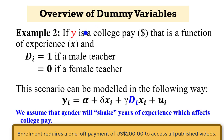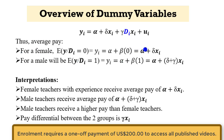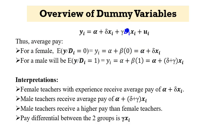Here is another example. In this case, college pay is a function of experience and gender, but the model is different. We assume that gender will affect the years of experience, which affects college pay. The gender is multiplied by the years of experience, and this affects the slope of the regression. Looking at the average pay for female — female is coded 0, so everything falls off — we are left with alpha and years of experience. For male, coded as 1, this will be the average pay for male.